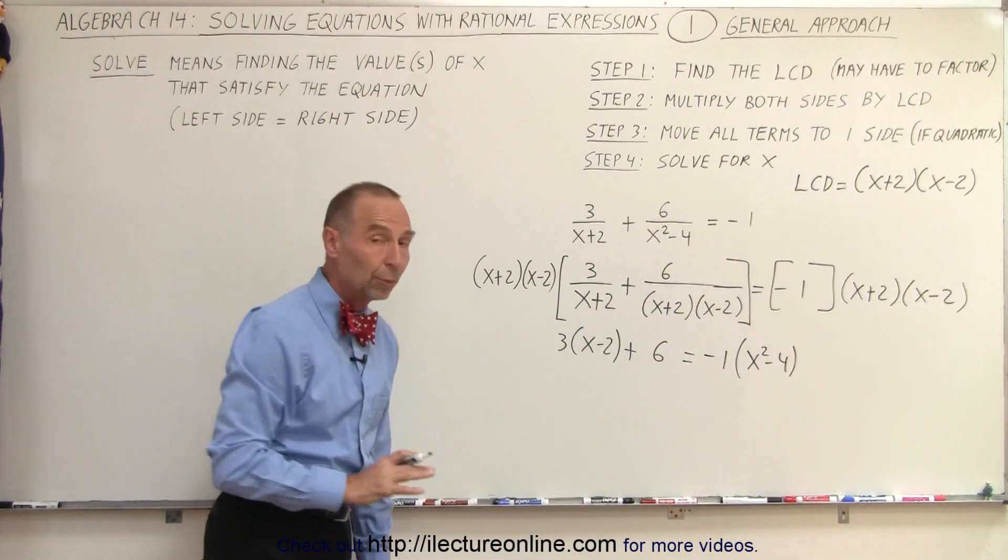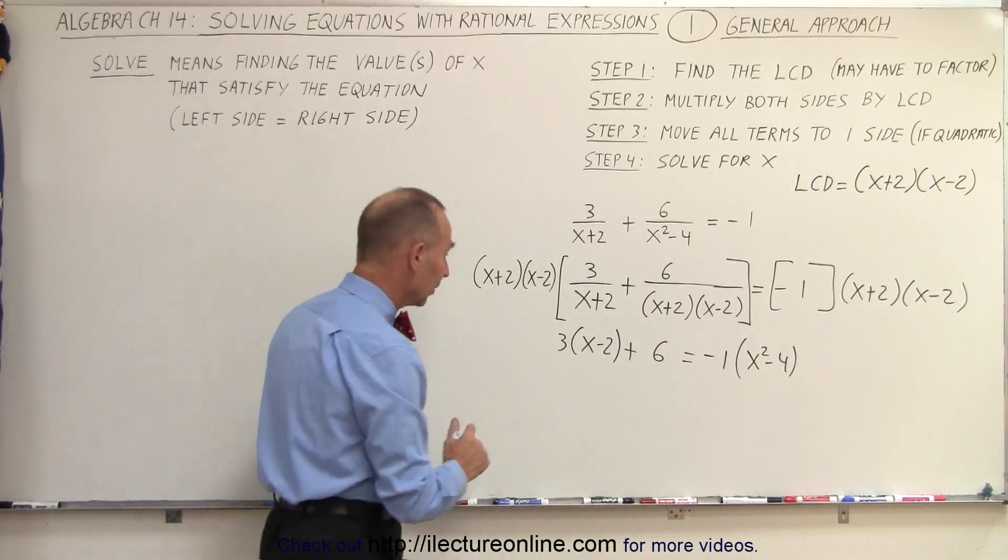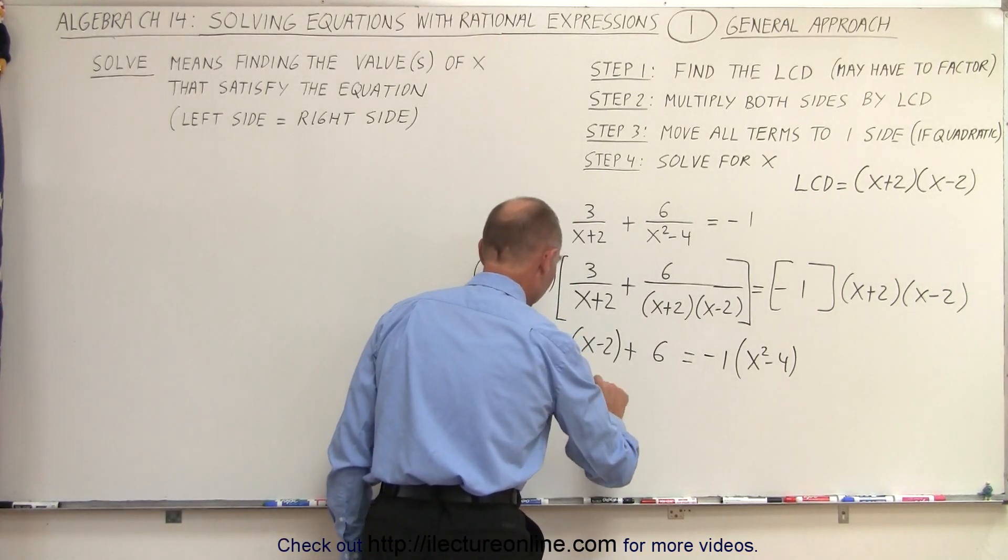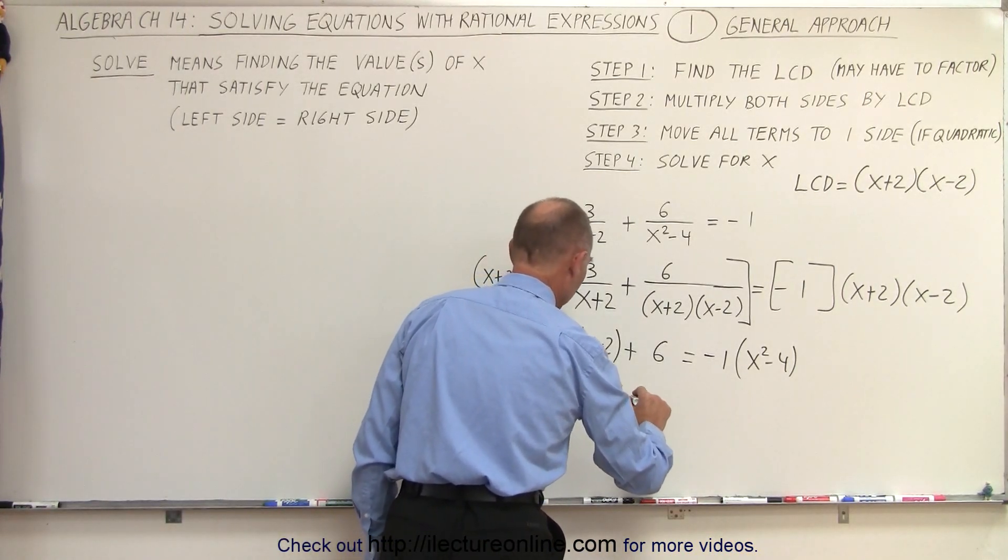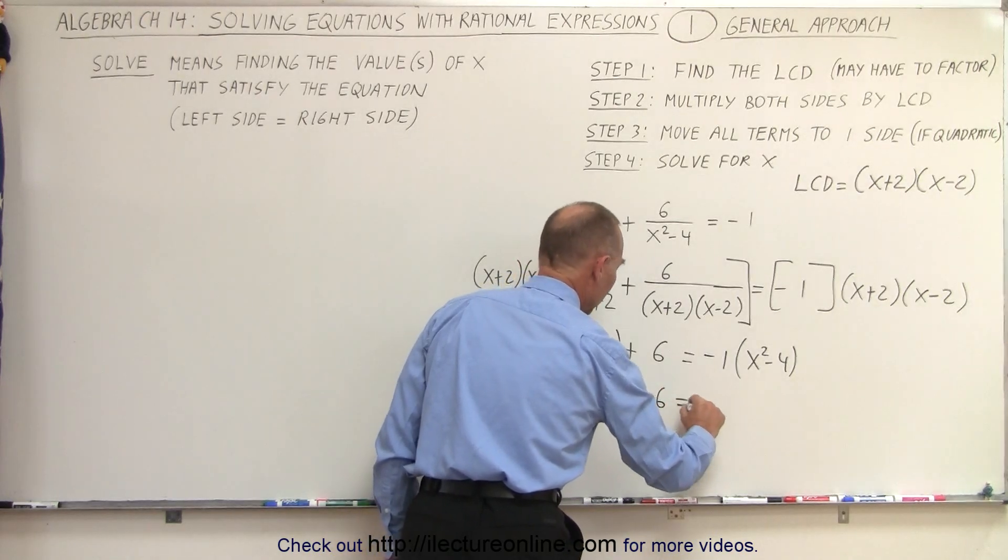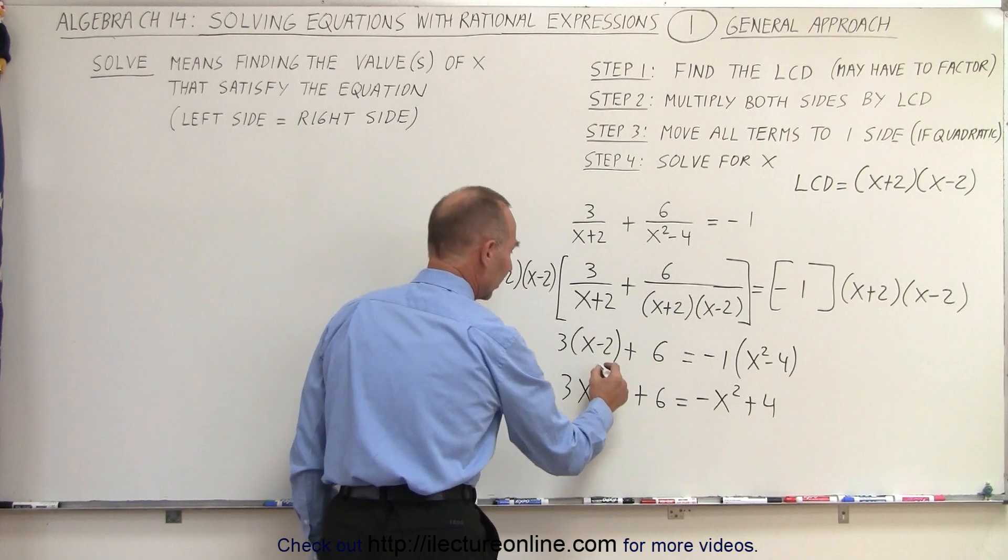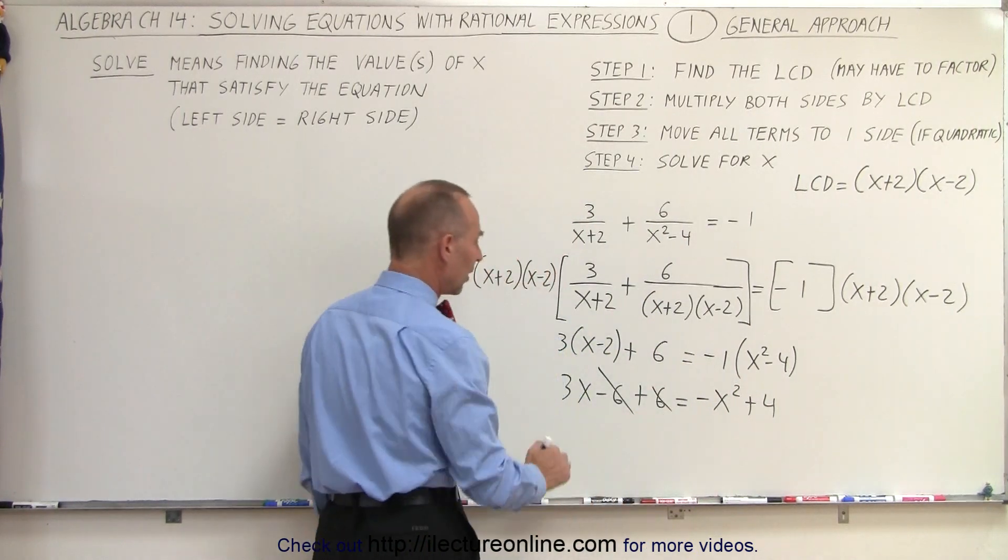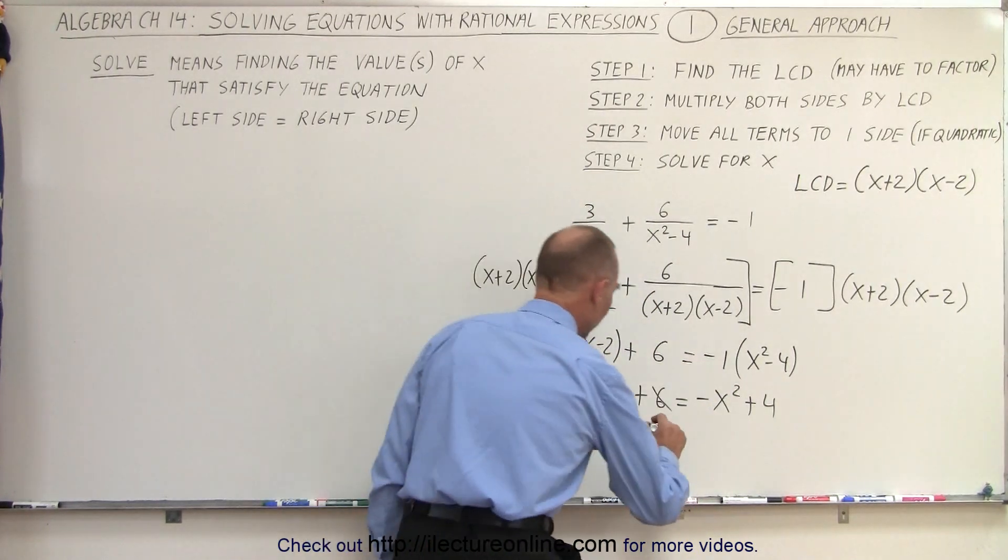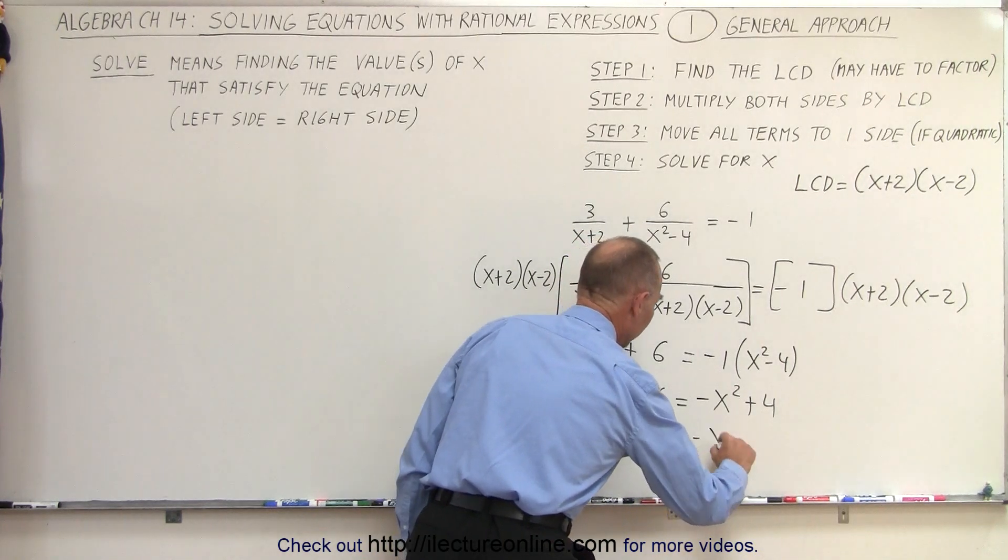Then we go ahead and get rid of the parentheses by multiplying everything through. 3x minus 6 plus 6 equals minus x squared plus 4. Notice that the minus 6 and 6 cancel out. Move everything over to one side. We have 0 equals minus x squared minus 3x plus 4.